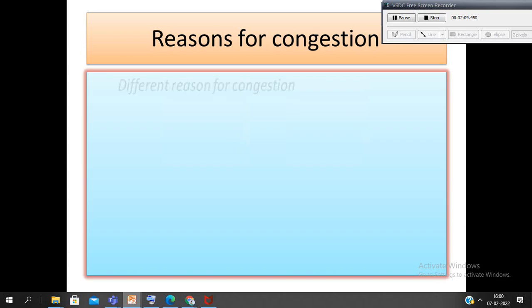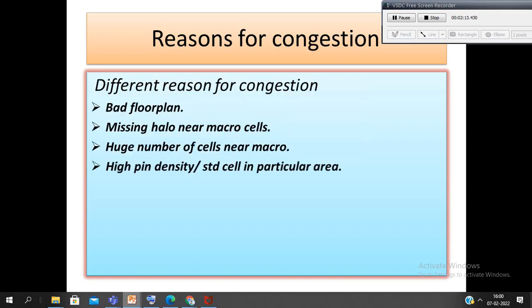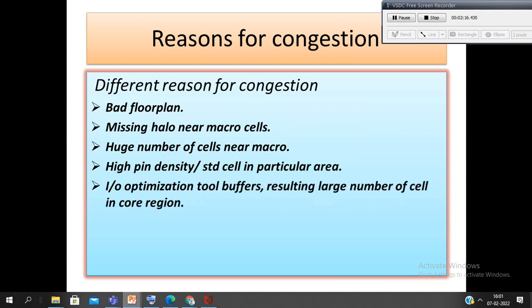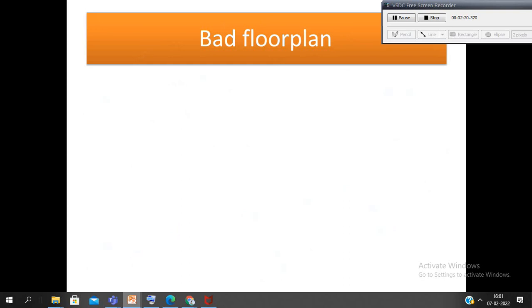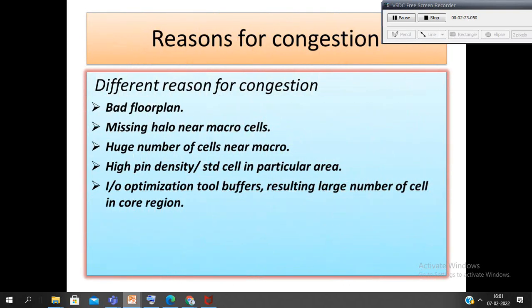These are the different reasons for congestion: missing placement blockages, inefficient floor planning, improper macro placement and macro pin locations, macro channels - that means placing macros in the middle of the floor plan. That will be considered as a bad floor planning. Floor planning the macros without giving routing space for interconnection between macros, high cell density, high local utilization - that also causes congestion. If your design has more number of AON or AOI cells, then that also causes some congestion, and also placement of standard cells near to the macros.